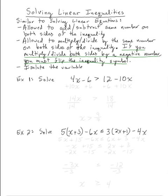So here are several examples. First example, let's solve the inequality 4x minus 6 is greater than 12 minus 10x. So I'm going to try to isolate the variable. As if I was solving an equation, I like to get the variables to one side. So I'll add 10x to both sides. I like to bring my variables to the left.